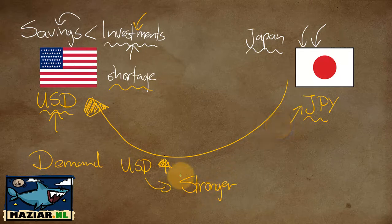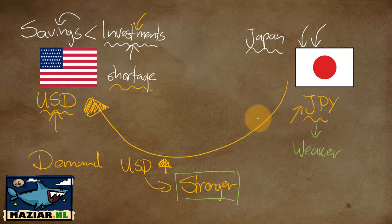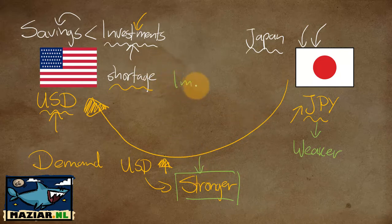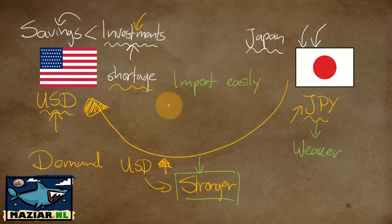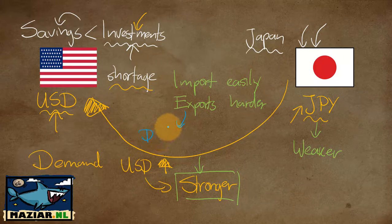The U.S. dollar becomes stronger relative to the Japanese yen — keeping all other factors constant so the model isn't polluted. Now think about what this does to import/export status: with a strong U.S. dollar, the U.S. can import easily, while exports become harder. In other words, the U.S. will most likely run a trade deficit.